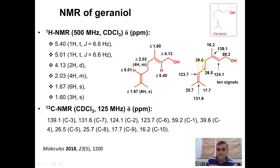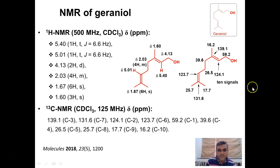In the 13C NMR of geraniol, the CH2 attached to the OH appears at 59.2 ppm. The four olefinic carbon atoms appear at 139, 131, 124 and 123 ppm in the olefinic region. The carbon attached to OH appears at 59 ppm, and the remaining CH2, CH2 and methyl group carbons appear in the aliphatic region. This is a very informative NMR profile for the geraniol molecule.